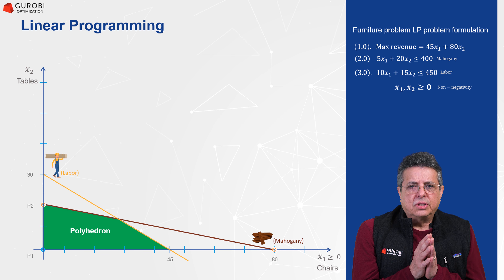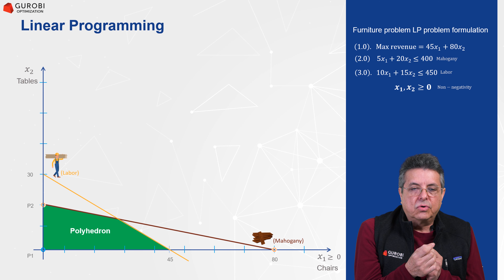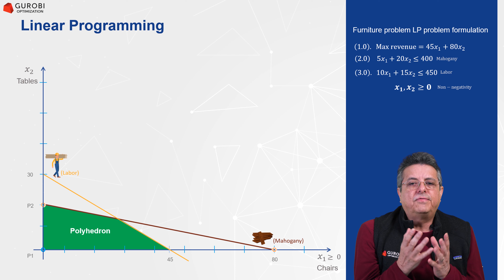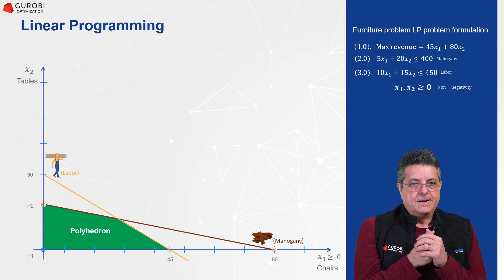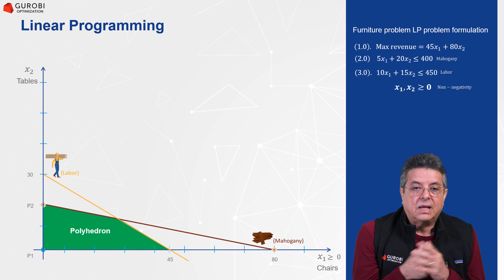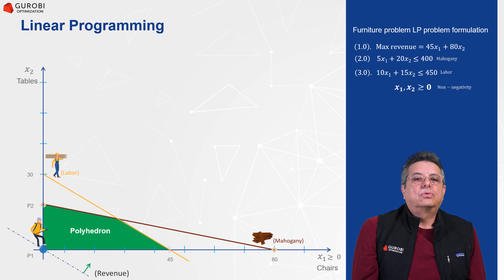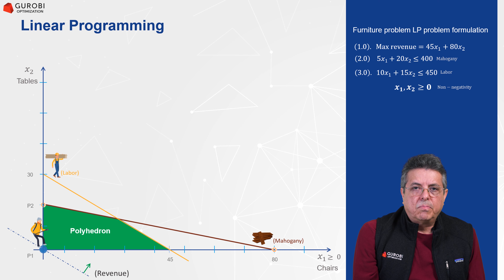Let's now discuss a systematic approach to traverse the vertices of the polyhedron that contains all the feasible solutions of the linear programming problem in order to find the optimal solution. This approach is known as the simplex method and was invented by George Dantzig. To explain the simplex method, we are going to use similar ideas to the ones we used when solving the problem graphically. The initial production plan was to build zero chairs and zero tables.